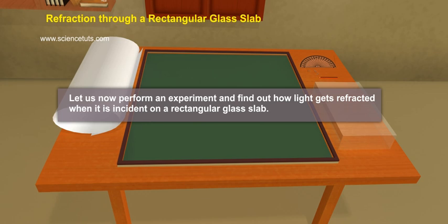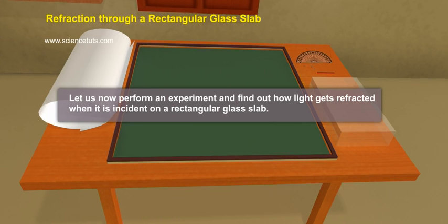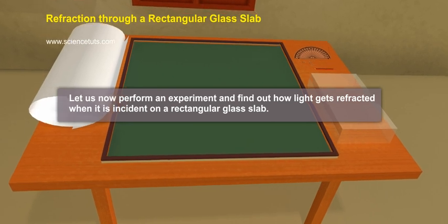Refraction through a rectangular glass slab. Let us now perform an experiment and find out how light gets refracted when it is incident on a rectangular glass slab.